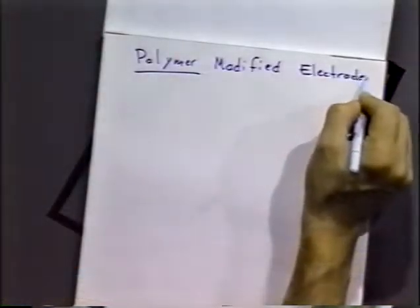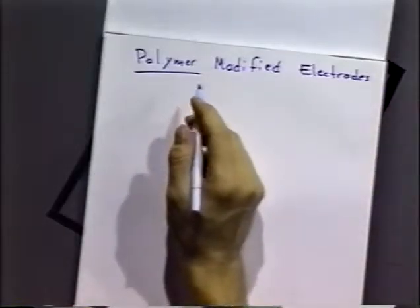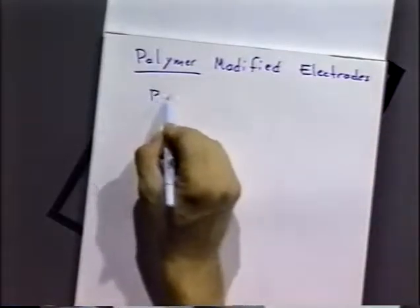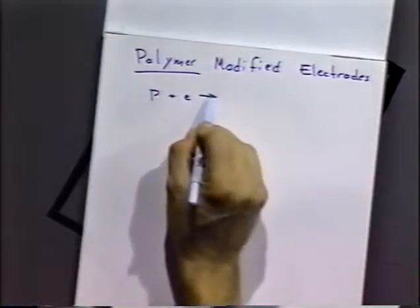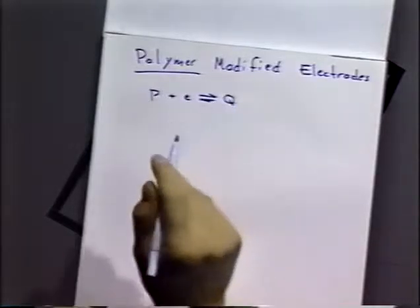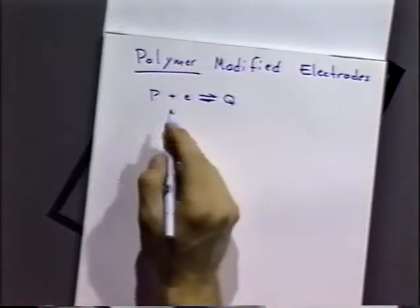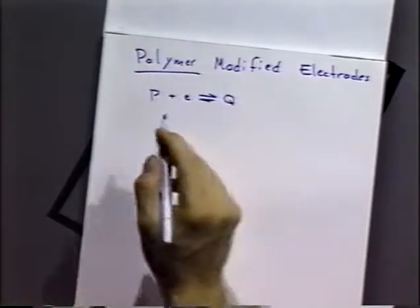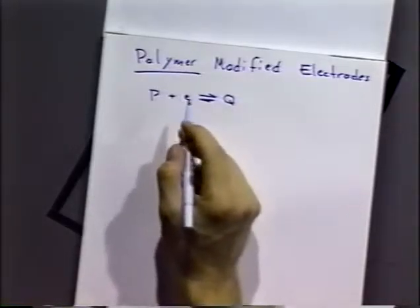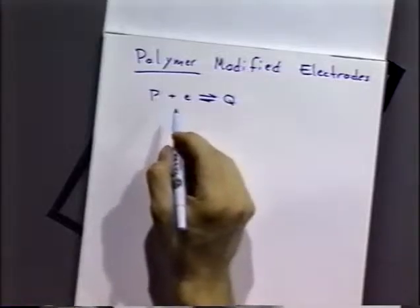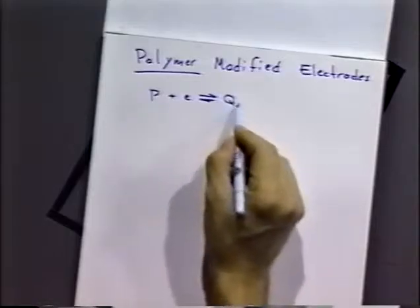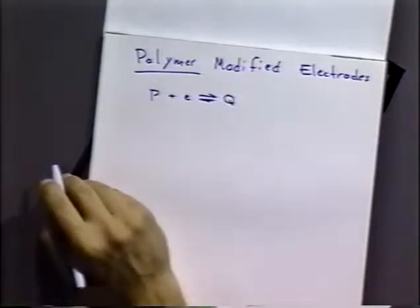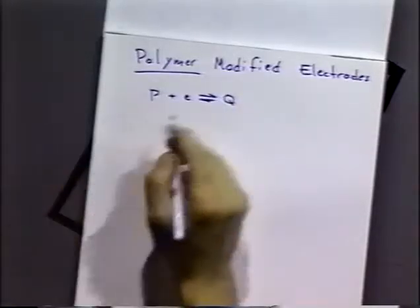Polymer modified electrodes are often used in this way. For example, if we want to reduce molecule A to B, the idea is that we can generate a reductant in situ — Q — that will do the job for us.